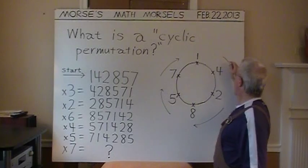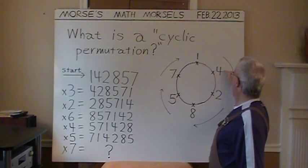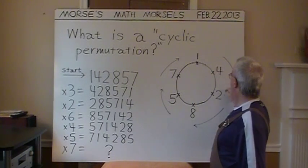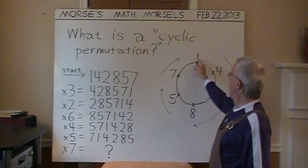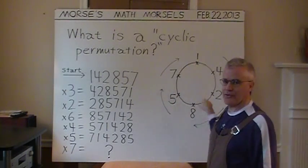And in the circle, it would be as though we started at person number four, and went 428571. So, there's another cyclic permutation.